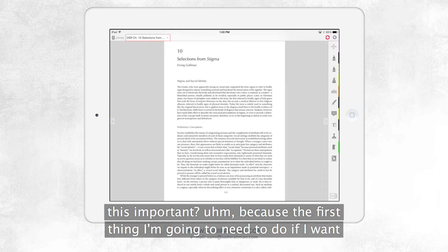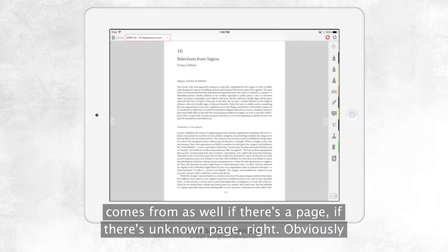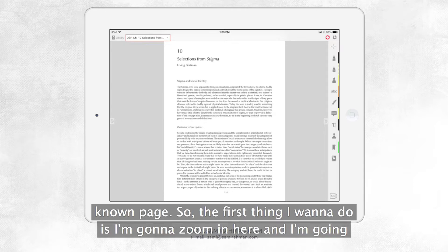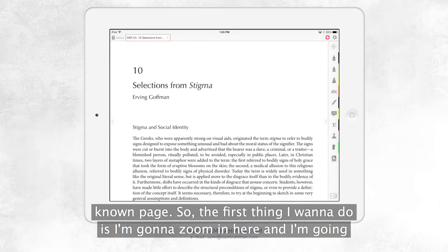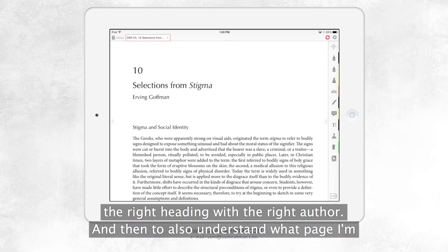Because the first thing I'm going to need to do if I want to cite in the way that APA format, you have to cite the page that a quote comes from if there's a page, if there's a known page. Obviously, on a webpage, there wouldn't be a known page, but on a journal article, there's a known page. So the first thing I want to do is, before I start reading, I need to set up two things: make sure my notes have the right heading with the right author, and then also understand what page I'm on.